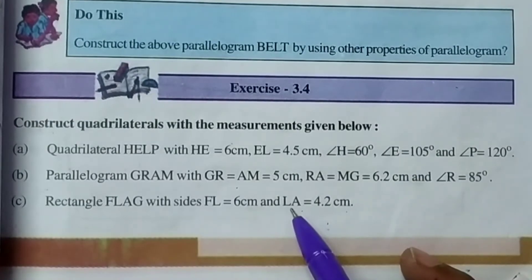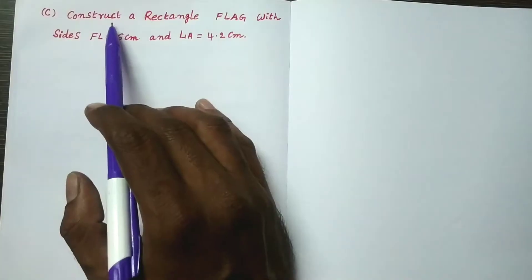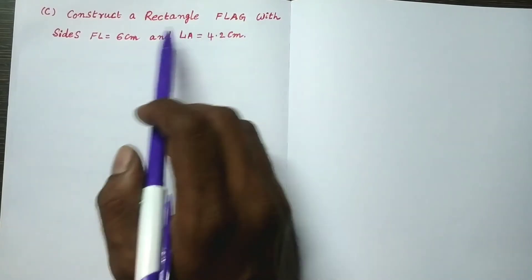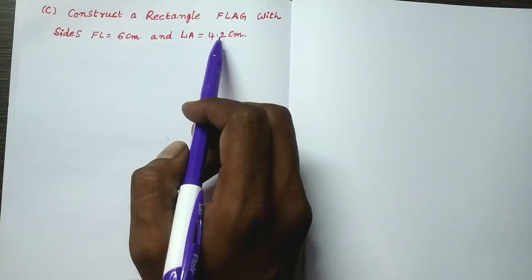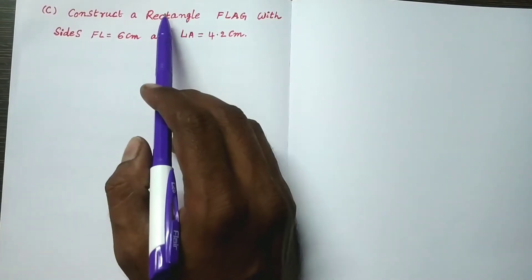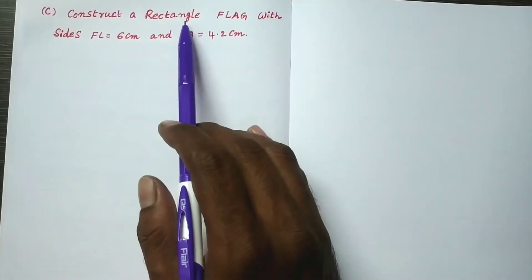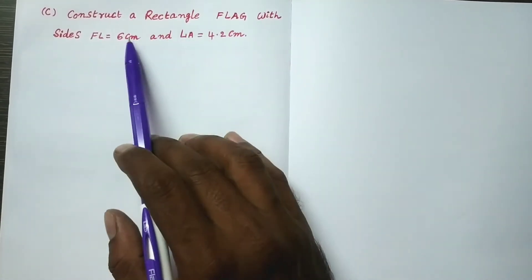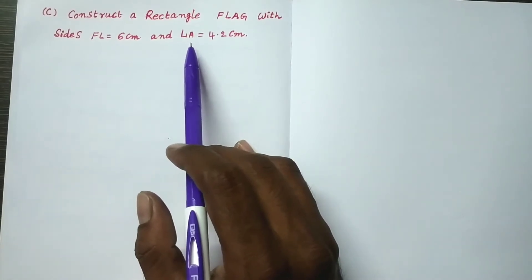This is Madhubabu. The construction is: construct a rectangle flag with sides FL equal to 6 centimeters and LA equal to 4.5 centimeters. A rectangle is a quadrilateral. To construct a quadrilateral, we need five measurements, but here only two measurements are given. So let us go to analysis.